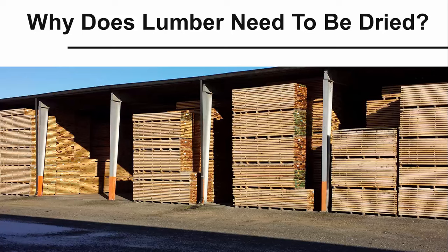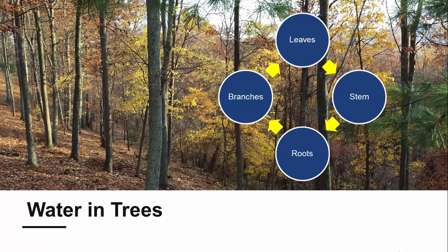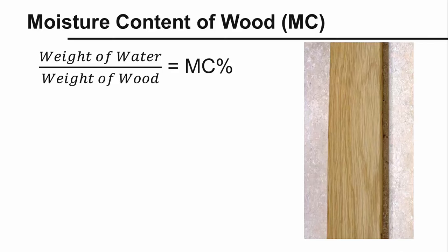People use wood for many different applications around the world. Whether the wood is used to build a kitchen cabinet or to frame out a house, it must be dried before it can be used. Let's take a look at some of the reasons why. Trees contain a lot of water — every part of a tree, from the leaves down to the roots, has some amount of water in it. Water is a critical component of the photosynthetic process, and it is used to transport sugars, nutrients, hormones, and minerals throughout the tree in what we call sap.